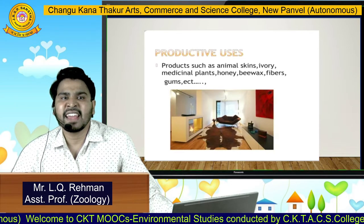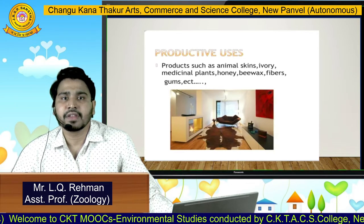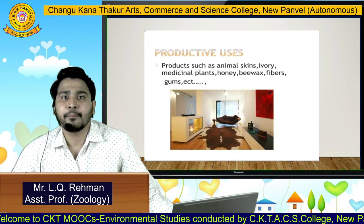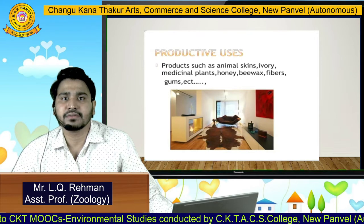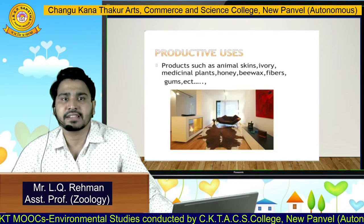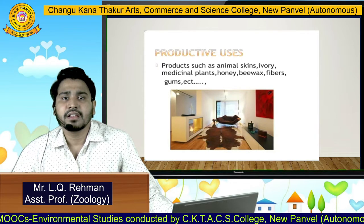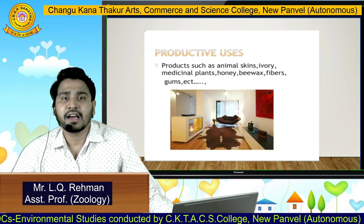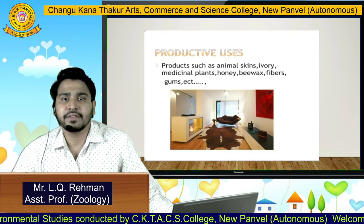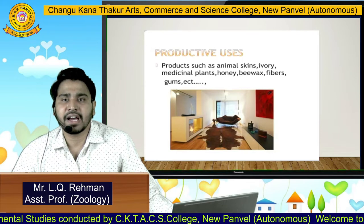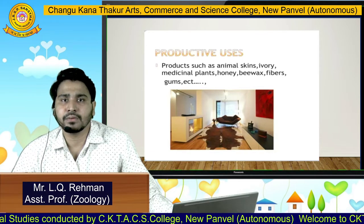Products such as animal skin, ivory, medicinal plants, honey, fiber, gums, etc. all come under productive use. They have a market value.